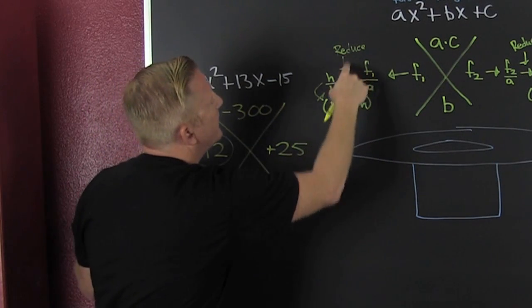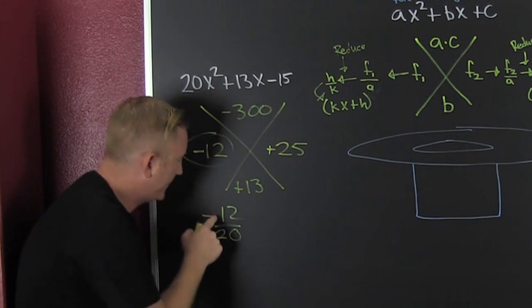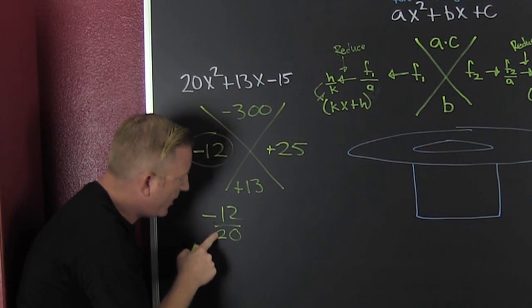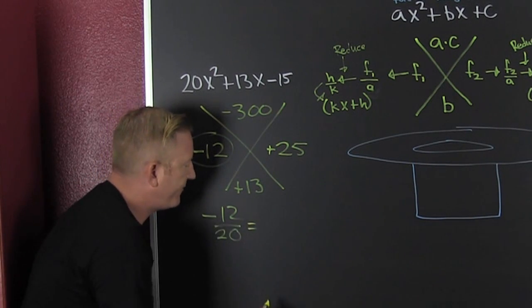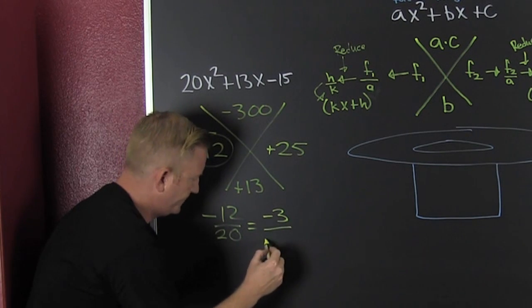So that's minus 12 over my leading coefficient 20. And then what? I'm going to reduce. So magic's about to happen. So 12 and 20, they both have a four in it. So then that's a three over five.